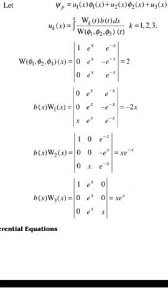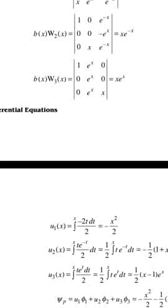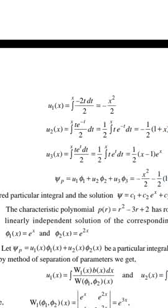b(x)·W₂(x): with the second column replaced, the determinant gives x·e^(-x). And b(x)·W₃(x): with the third column replaced, the determinant gives x·e^x.